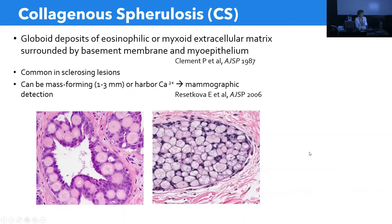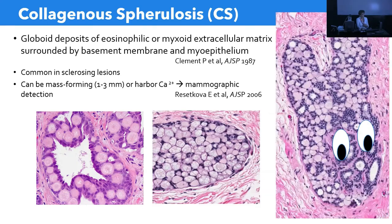Collagenous spherulosis is a lesion consisting of globoid deposits of eosinophilic or more myxoid delicate extracellular matrix surrounded by basement membrane and myoepithelial cells. It is common in sclerosing lesions such as papilloma. Sometimes it can be mass-forming at one to three millimeters, and many times comes to detection mammographically because the globoid deposits can calcify.